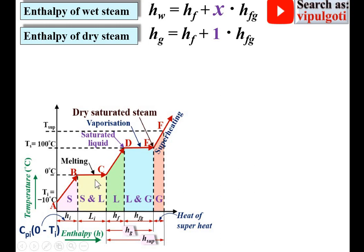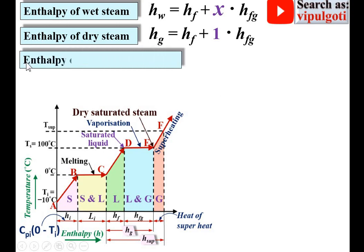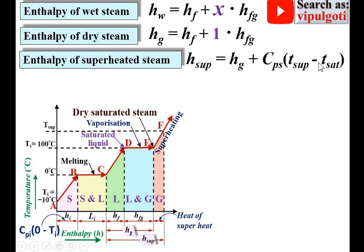It is very easy to solve the numerical portion of the properties of steam using this diagram. Third, enthalpy of superheated steam — that means above point E. The enthalpy of superheated steam with reference to point C is Hg plus the heat of superheat, which is Cp into delta T. So the enthalpy of superheated steam equals Hg plus Cp times (T superheated minus T saturation), where Cp, the specific heat at constant pressure of steam, is generally taken as 2.1 kilojoule per kg Kelvin.